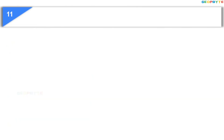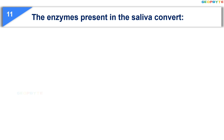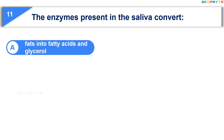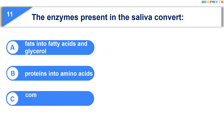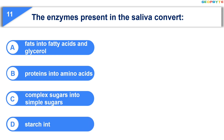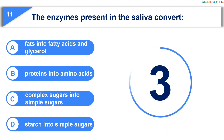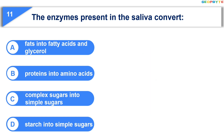Moving to the 11th question: the enzymes present in saliva convert — Option A: fats into fatty acids and glycerol; Option B: proteins into amino acids; Option C: complex sugars into simple sugars; Option D: starch into simple sugars. Your time is up and the correct answer is Option D: starch into simple sugars.